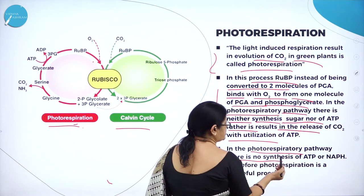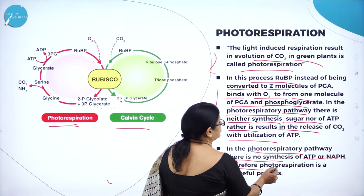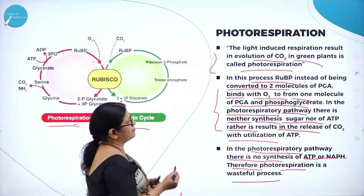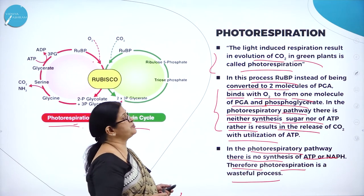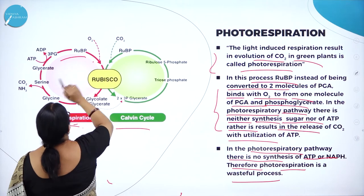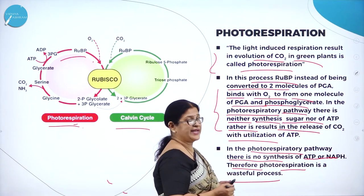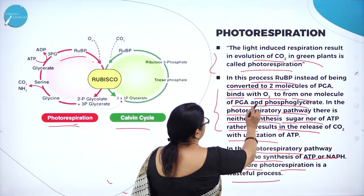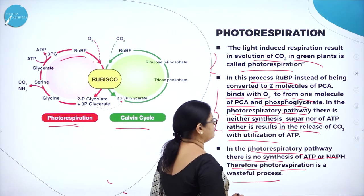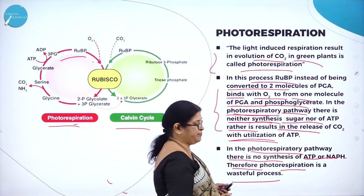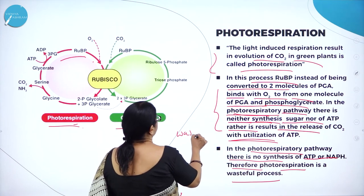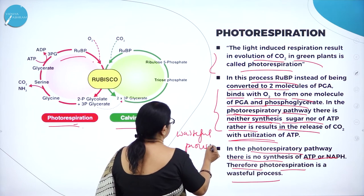In the photorespiratory pathway, there is neither synthesis of sugar nor of ATP. Rather, it results in the release of carbon dioxide with utilization of ATP. There is no synthesis of ATP or NADPH. Hence this photorespiration is called a wasteful process.